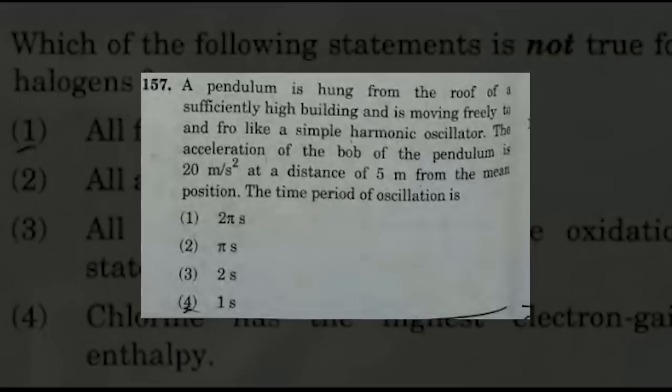The next question: a pendulum is hung from the roof of a sufficiently high building and is moving freely in simple harmonic motion. The acceleration of the bob is 20 m/s² at a distance of 5 meters from the mean position. The time period of oscillation is — the suggested answers are options 2 and 3, that is, π seconds or 2 seconds.